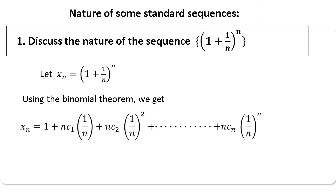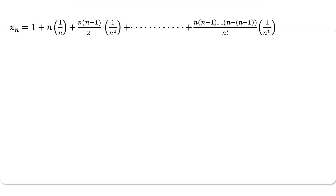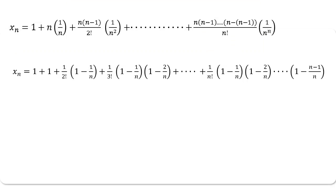After expansion using the binomial theorem, you can expand the RHS like this. After simplifying the terms nC1, nC2, and so on, you get the simplified form. Again, after simplification on the right-hand side, you will get this result. This is your xn.